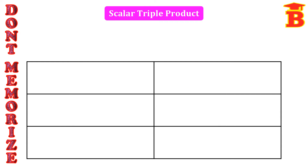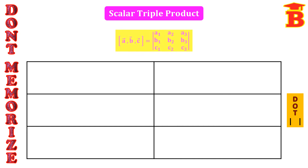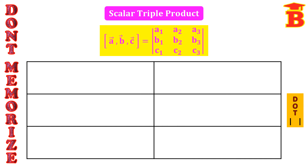Next, let us see the important results in scalar triple product. Scalar means dot product, and we know that dot product is the determinant formula. That is, box of ABC equals the determinant: first row A1, A2, A3; second row B1, B2, B3; third row C1, C2, C3.